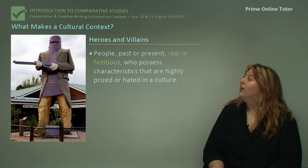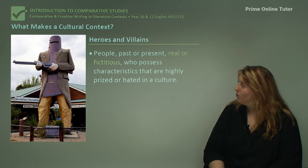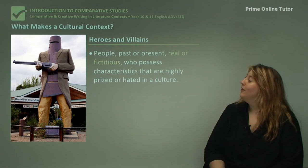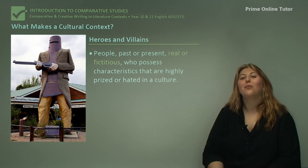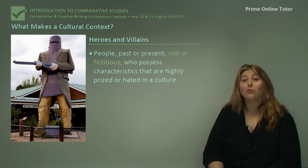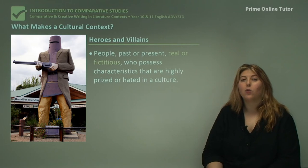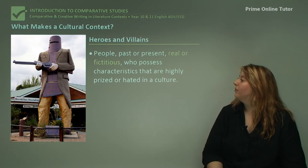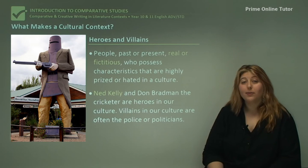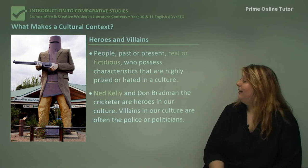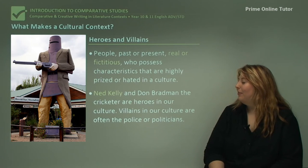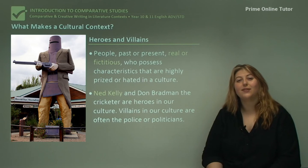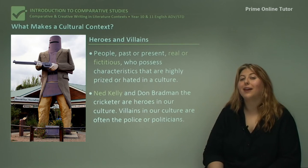Heroes and villains are people — past or present, real or fictitious — who possess characteristics that are highly prized or hated in the culture. They don't even have to be a real person; they can be an idea like Uncle Sam. Obvious examples from Australian culture are Ned Kelly and Don Bradman. Villains in our culture tend to be police or politicians — authority figures — because Australians haven't quite forgotten that convict heritage.